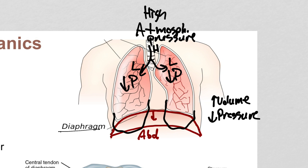Air enters and the lungs fill — that's inhalation. It's not just the diaphragm either. There are also muscles in the ribs called intercostals. Your external intercostals can elevate the rib cage, so the top of the lungs go up. Whether your rib cage is going up or your diaphragm is going down, either way you're increasing volume and decreasing pressure.